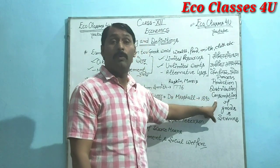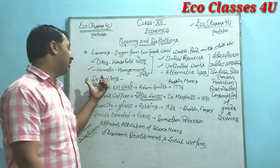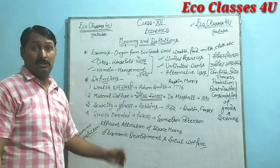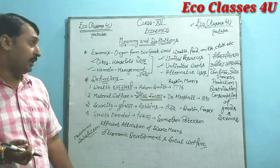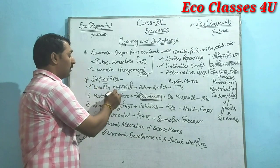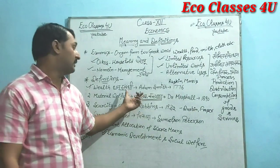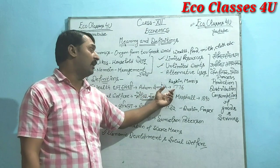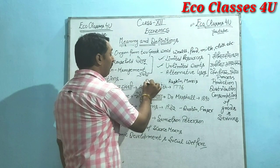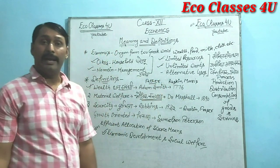Vastuyen aur sewaen — utpadan, vitran aur upbhog jo kiya jata hai, that is known as economics. Ab definitions ki baat karte hain — definitions hamare paas four types ki hain. Yahan par de di gayi hain. First one is the Wealth Definition — Hindi mein isko bolte hain dhan-sambandhi paribhasha — and that is given by Professor Adam Smith in 1776.